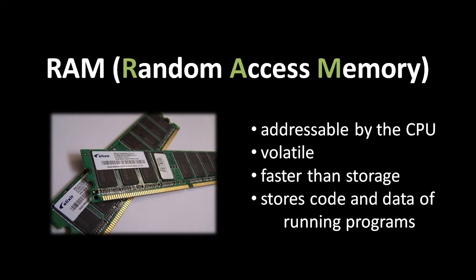If the CPU wants to read or write a byte in RAM, it specifies the byte by its numeric address. A notable characteristic of RAM is that it's volatile, meaning that as soon as a RAM chip loses its steady stream of power, the content of the RAM gets scrambled. None of the bits can be relied upon anymore because, without power, they get flipped unpredictably.